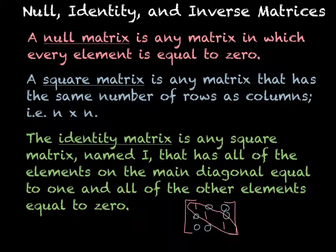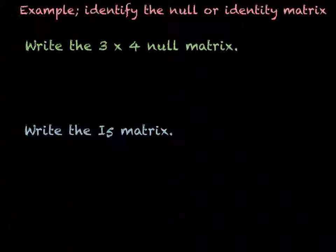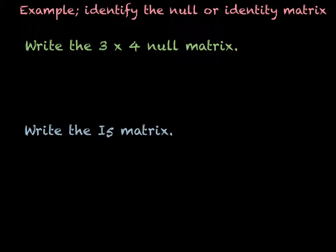And that would be an identity matrix, and that would be an I3 matrix. Let's do some examples of writing null and identity matrices. So the first one, we want to write the 3 by 4 null matrix.